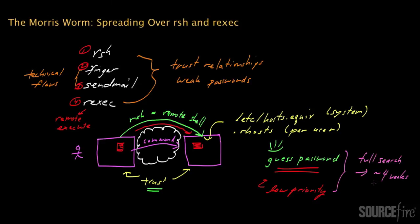That's basically how the Morris worm would leverage RSH and rexec in conjunction with things like password guessing as it needed to in order to propagate over the internet.